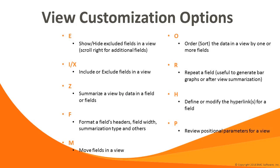In addition to setting filters and thresholds, MainView provides many other customization options. The E option toggles on and off the display of excluded fields in a view — that is, fields that are not normally displayed. The I and X options include or exclude fields from a view. The Z option summarizes the data in a view by the targeted field. The F option allows for formatting fields — you can modify field sizes and labels and specify how to report values for summarization records.